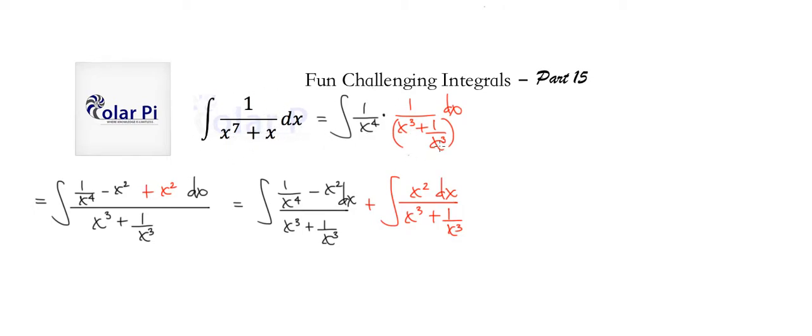First, we can rewrite this integral, and then in turn we can rewrite this again. I'll fill you in on one intermediate step. We can rewrite this as the integral of 1 over x to the 4th dx divided by x cubed plus 1 over x cubed, right?